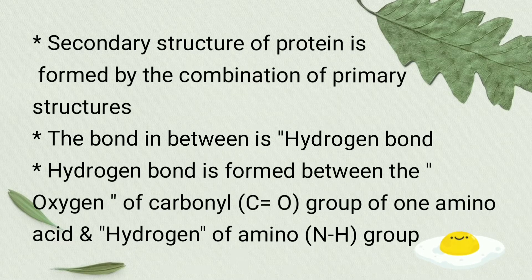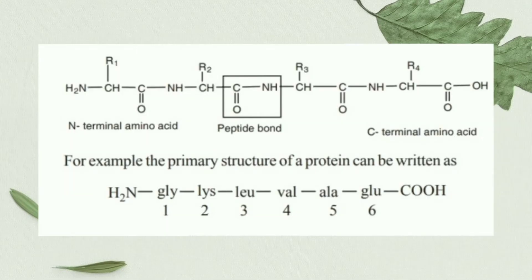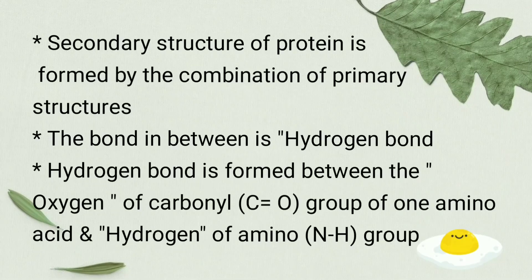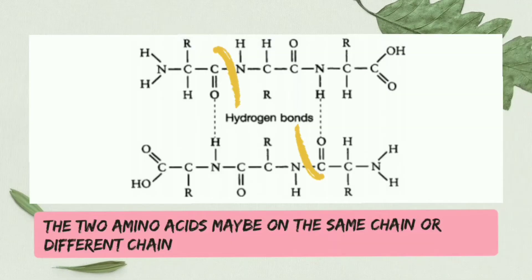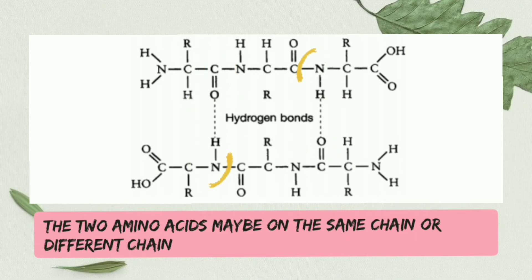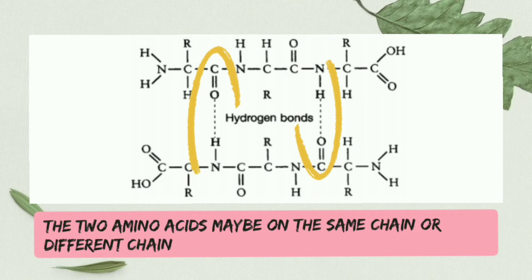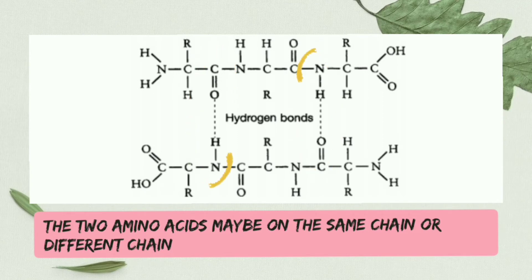The hydrogen bond is formed between the carbonyl group (C=O) and the NH group. This C-O-N-H group forms the peptide bond, as we already discussed in primary structure. Specifically, the hydrogen bond is formed between the oxygen of the carbonyl group and the hydrogen of the NH group. In this manner, many primary structures are linked together to produce secondary structure. The hydrogen bond formed can be between amino acids of the same polypeptide chain or of different polypeptide chains.